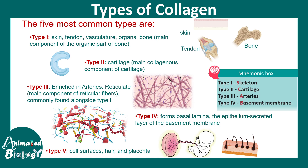One can use a mnemonic known as CAB to remember where each type is enriched: type 1 is enriched in the skeleton (bone), type 2 is enriched in cartilage, A for arteries, and B for basement membrane. This is a quick mnemonic to remember the collagen types and their locations.